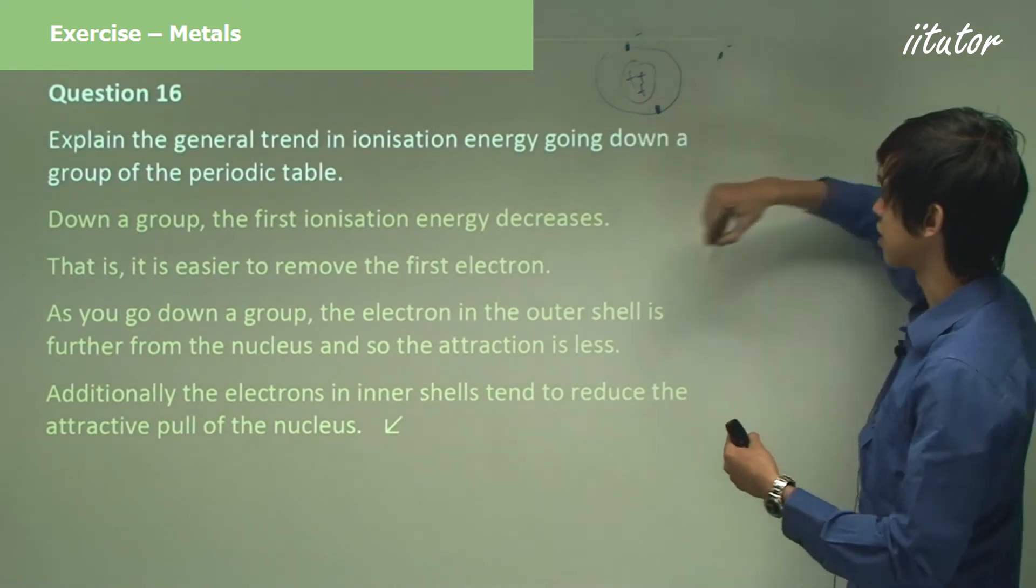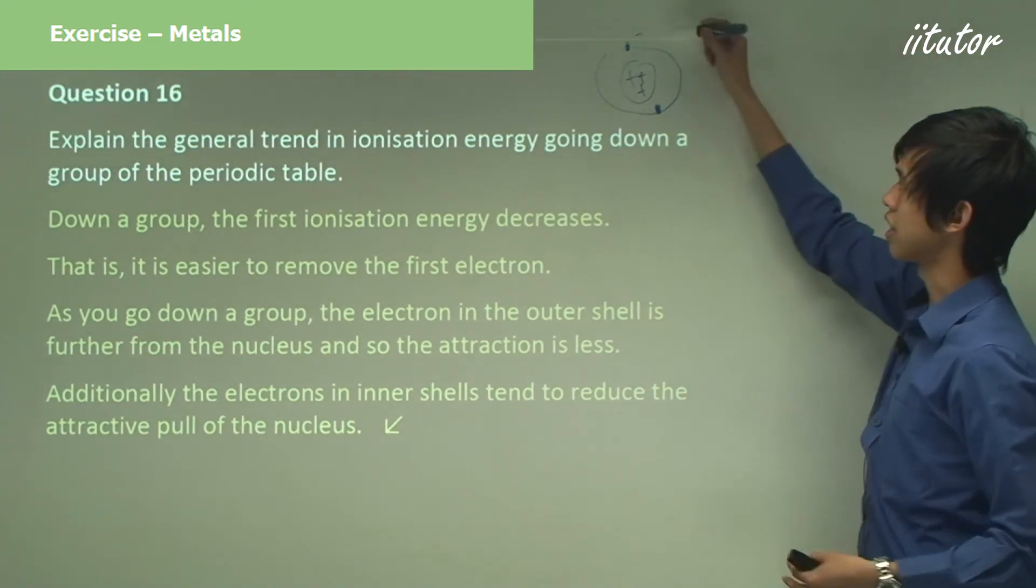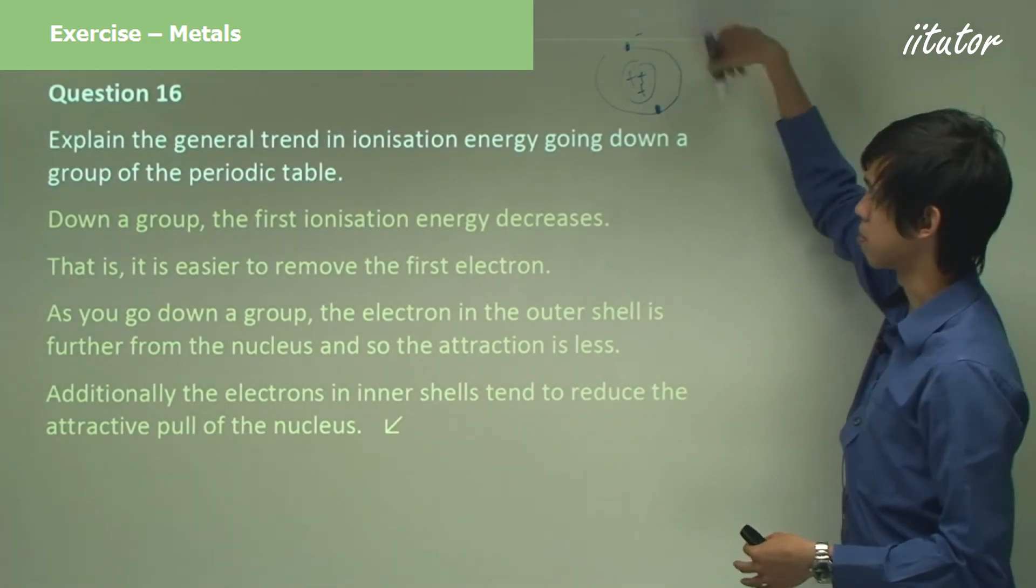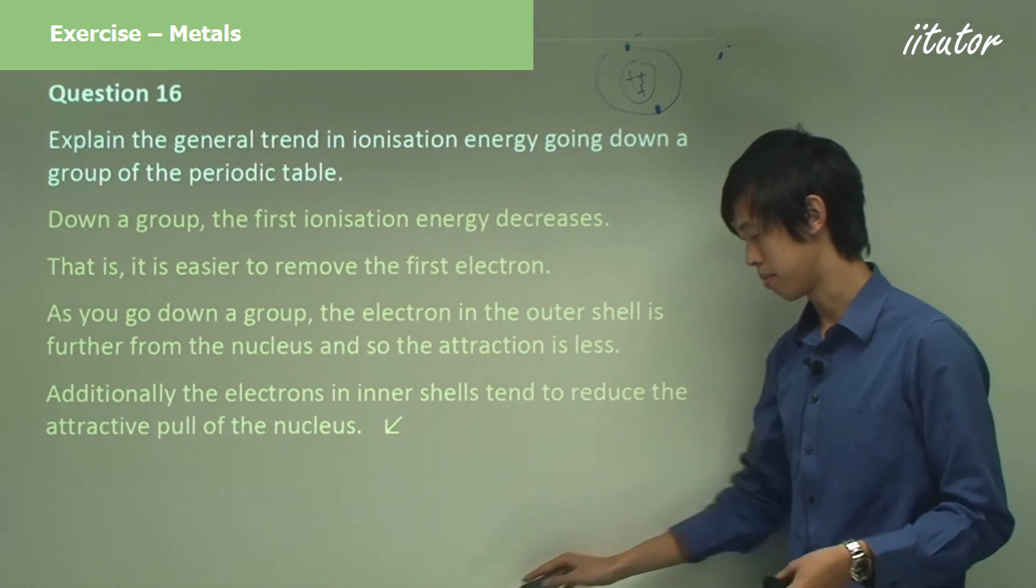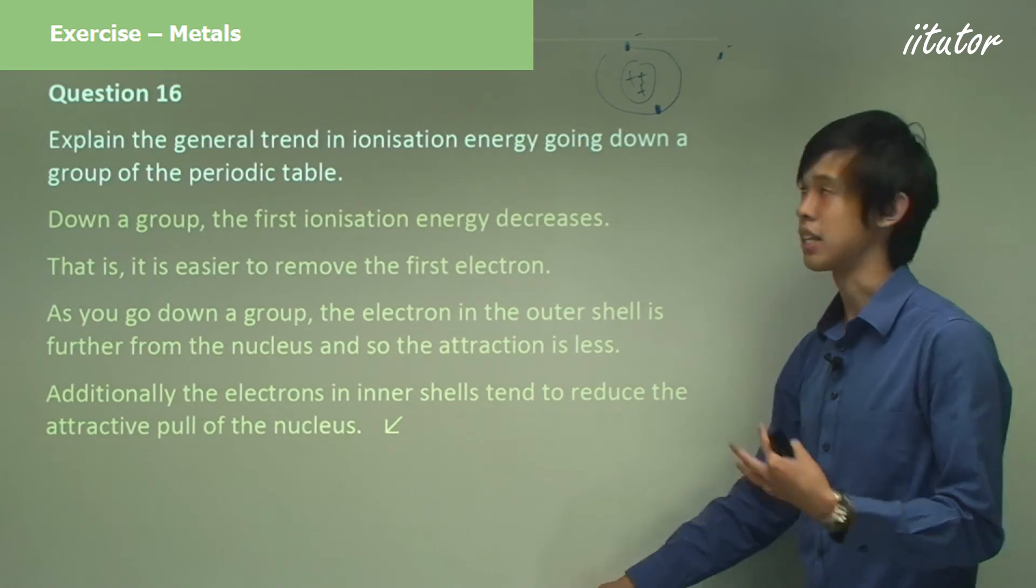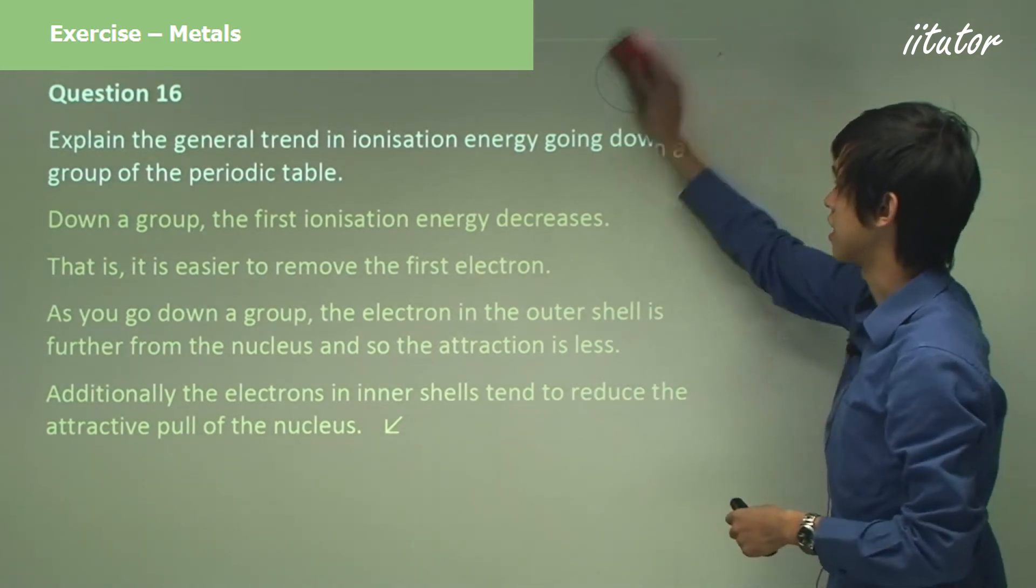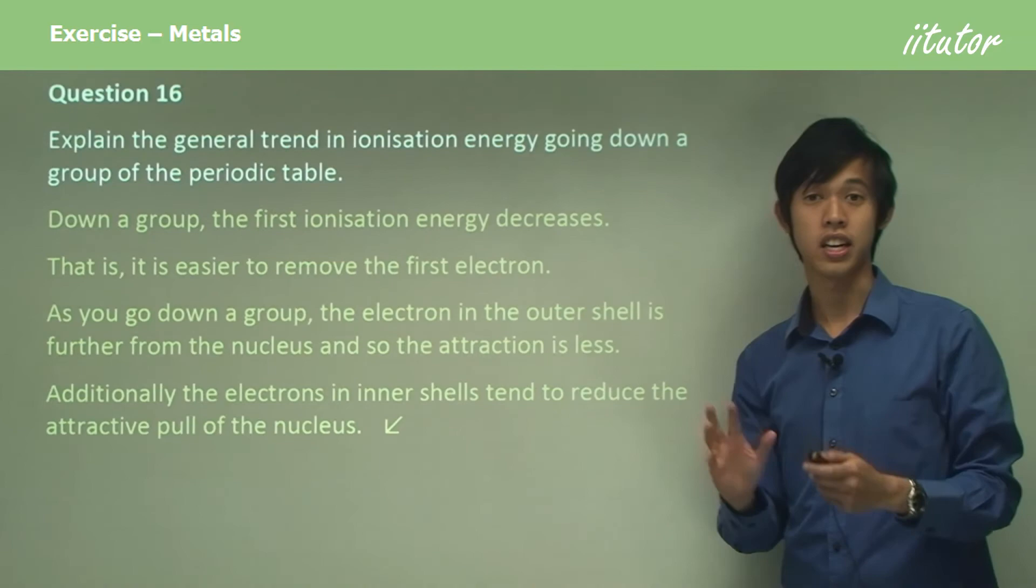So as you go down a group, if you put more and more electrons in, there'll be more electrons cancelling out the positive protons. So this electron out here will feel less of a pull inwards because of that shielding effect.